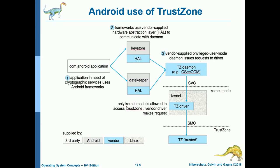Android uses TrustZone. All applications have a folder at com.android.application. In step one, an application in need of cryptographic services uses Android frameworks. In step two, those frameworks use a vendor-supplied hardware abstraction layer to communicate with the daemon — specifically accessing the key store and gatekeeper from the hardware abstraction layer. In step three, the vendor-supplied privileged user-mode daemon issues a request to a driver, labeled as trusted, such as QCCOM via SVC service.